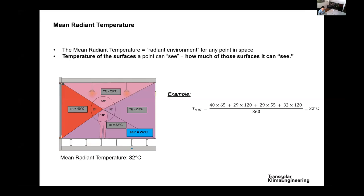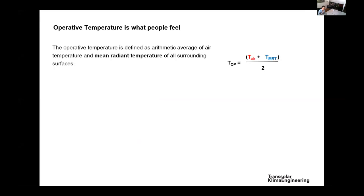The concept of mean radiant temperature is linked to operative temperature. What people feel is approximately half radiation and half convection, with convection corresponding to air temperature. That's why a new definition of temperature was developed — operative temperature — representing what people actually feel. It's defined as: operative temperature equals air temperature plus mean radiant temperature, divided by two.